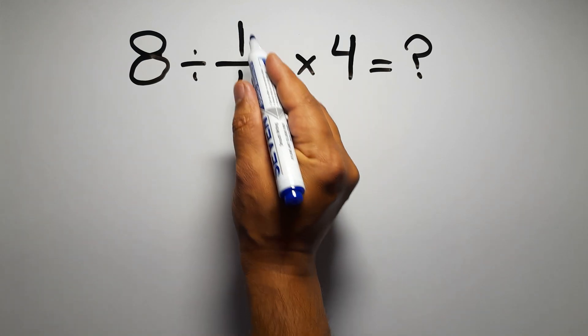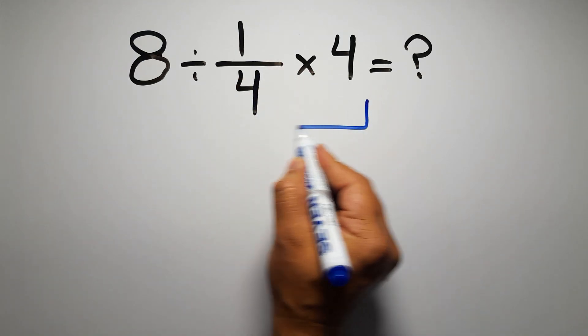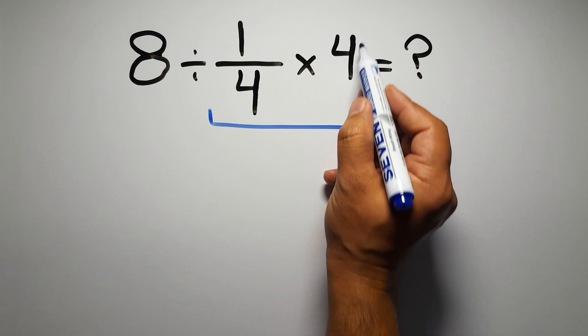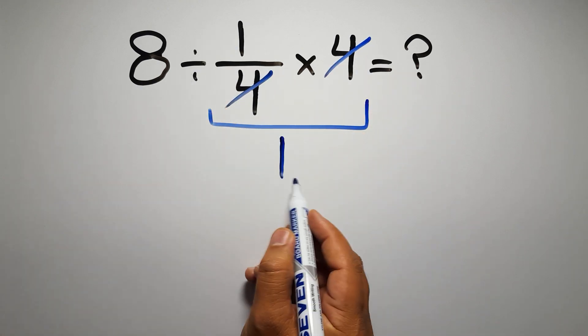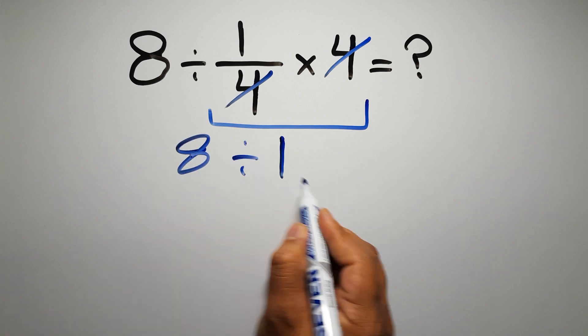First, we do this multiplication, 1 over 4 times 4. We can easily cancel this 4 and this 4, so here we have just 1, and 8 divided by 1 equals 8.